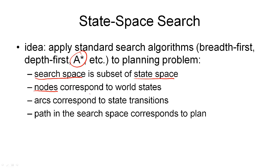The nodes in our search space correspond simply to world states. So the states that we have in our planning problem are nodes in our search tree. The arcs in the search space correspond to state transitions as defined by the operators and the actions that we execute as part of the plan. And a path in the search space corresponds to a plan, which is the solution we are looking for.